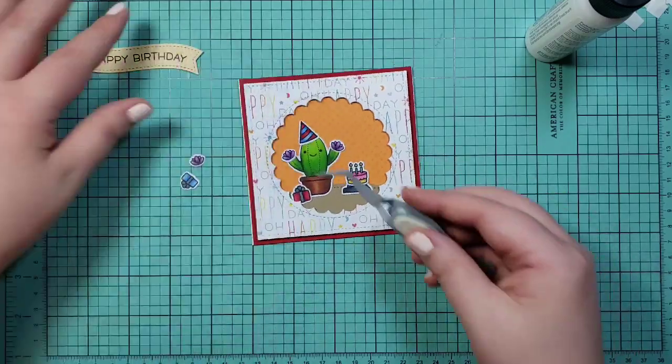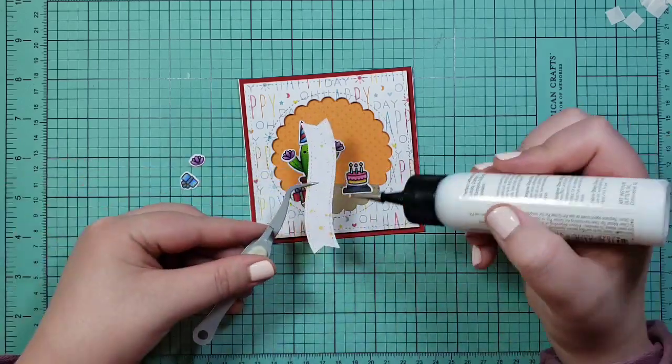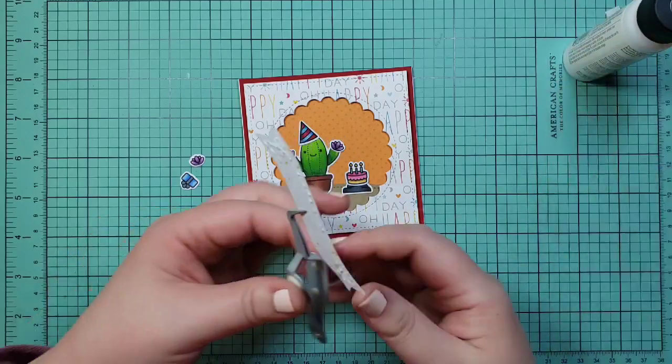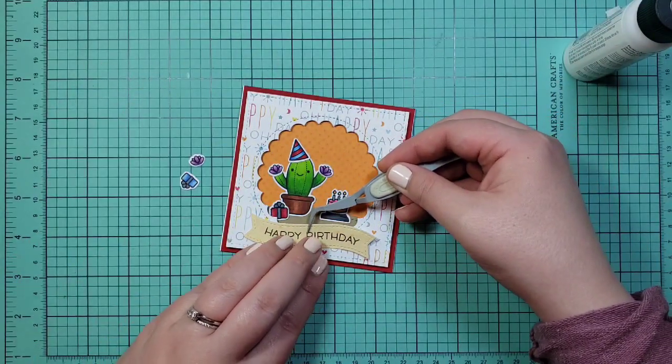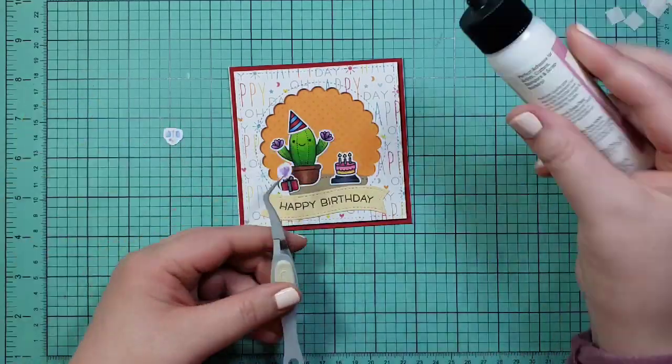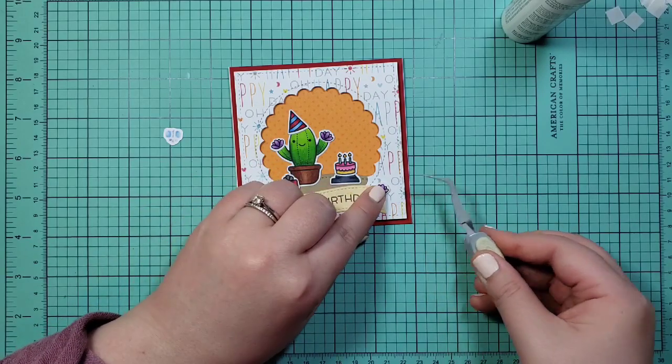For the birthday banner, I just assumed that there is some glue on either end and then along the bottom, so that's how I glued it up. I'm just going to stick that down, rub it in a little bit, and then the cactus flower goes on the other end and the present on the other end of the banner.